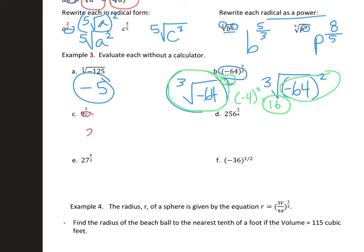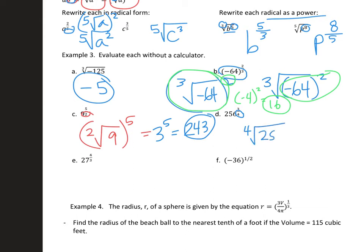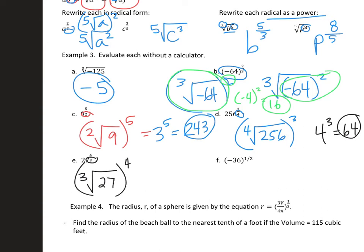Do the denominator first: the square root of 9 is 3, then do the power — 3 to the 5th. 3 to the 4th is 81, and 81 times 3 is 243. That's a bigger one to do without a calculator. Next, do the root first — the 4th root of 256 is 4 — then do the power: 4 to the 3rd is 64. And for 27 to the 4/3: do the cube root of 27 first, which is 3, then take that to the 4th power — 3 to the 4th is 81.